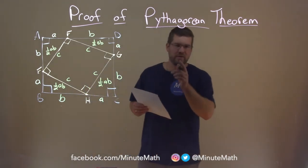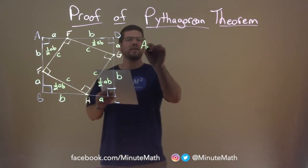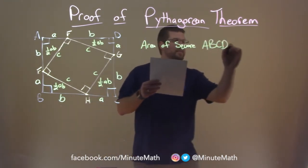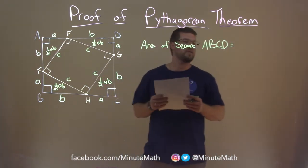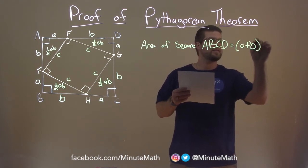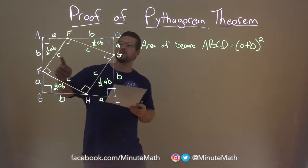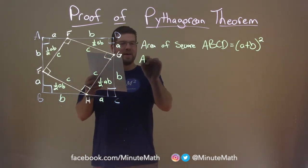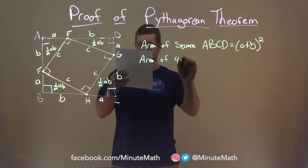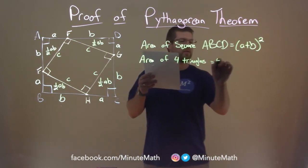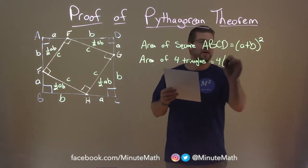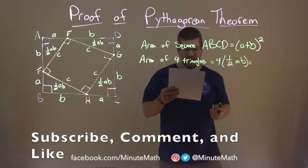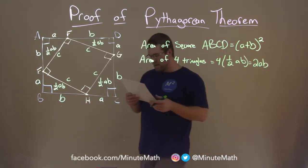So let's write down the areas that we know. We have the area of square ABCD, and that is equal to, well, the length of A plus B, one of the sides, and that's going to be squared. All right. The four triangles, all right, we can add all of them up. Area of four triangles is four times the area of one of the triangles, which is one half A times B, which we can easily see this is just 2AB. All right.